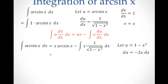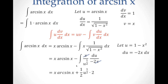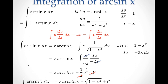Express this now in terms of u: it becomes x over u to the power of one half. From here, dx = du over negative 2x. We bring out the constant, which becomes positive one half, and then the integral of u to the power of negative one half is u to the power of one half times 2. We cancel out the 2, and going back to x, this becomes square root of 1 minus x squared. So the integral of arc sine x with respect to x equals x arc sine x plus square root of 1 minus x squared plus the constant.